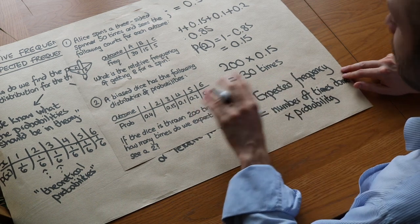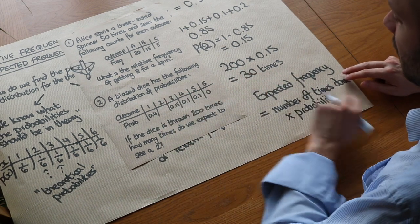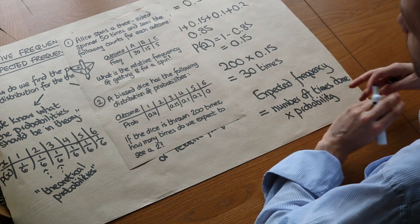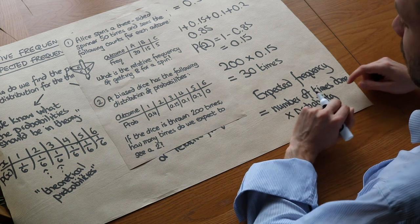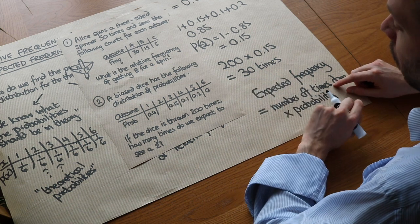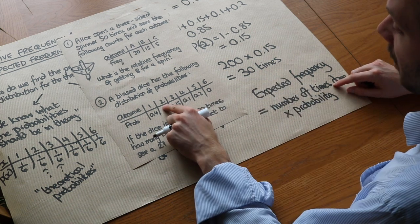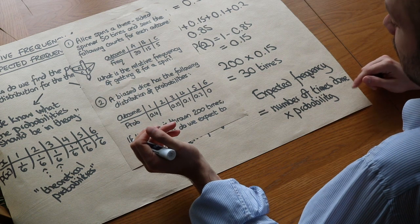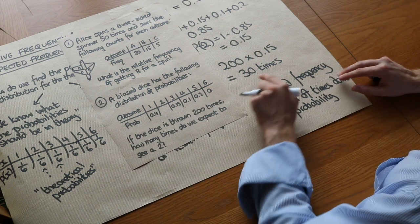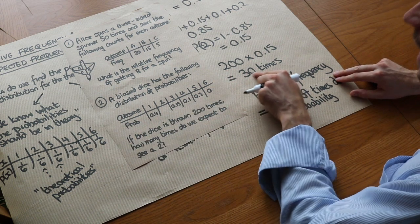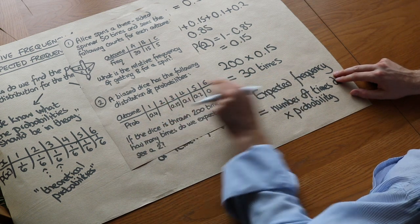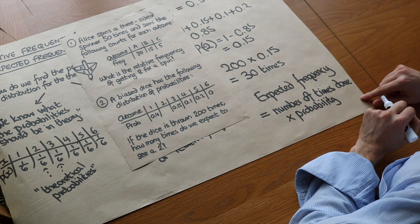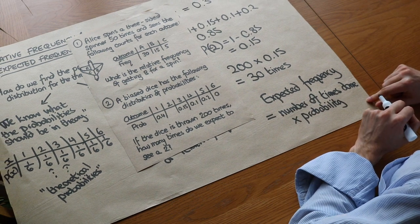That doesn't mean we necessarily would see a 2 exactly 30 times in 200 throws — the dice still behaves randomly. We could see a lot more 2s, a lot fewer 2s, or even no 2s at all just by chance. But on average we'd expect to see a 2 thirty times, and that's why it's known as expected frequency.